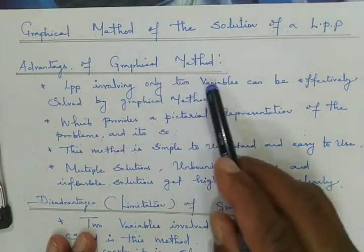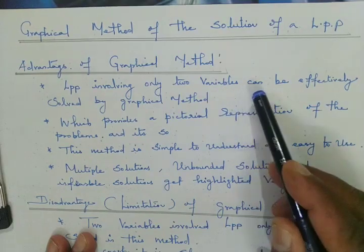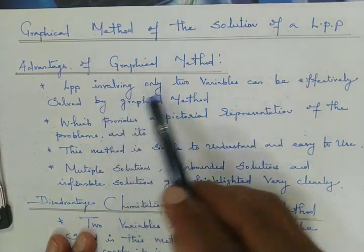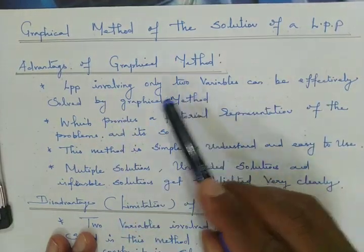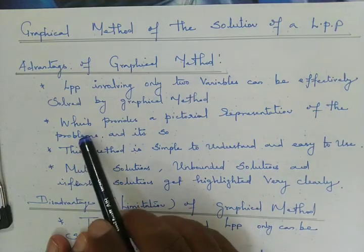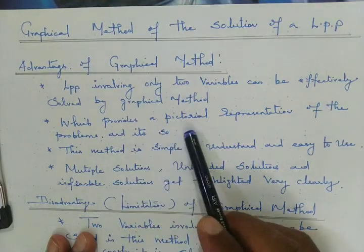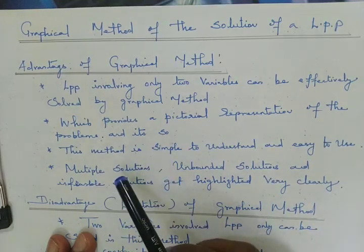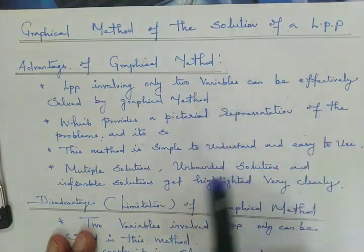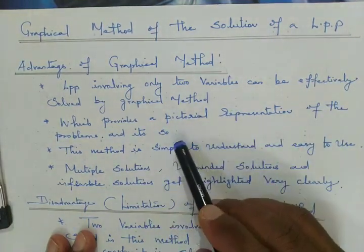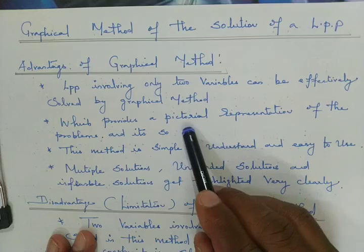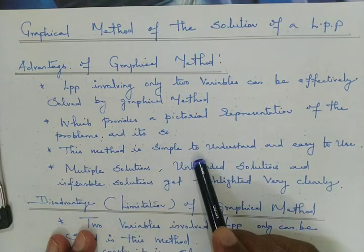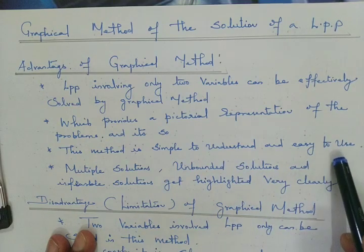The reason is that in a graph sheet we have only two axes — x and y, or we can give the names x1 and x2. So whenever the problem comes with two variables only, we can solve it by the graphical method, which provides a pictorial representation of the problem. In this graphical method we can find the region — the exact place where the solutions exist — that is the pictorial representation. This method is simple to understand and easy to use.